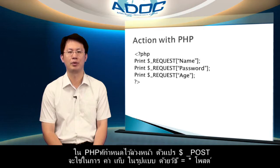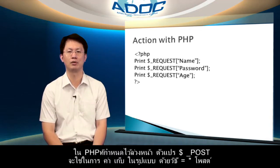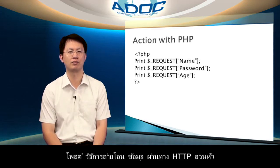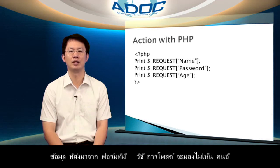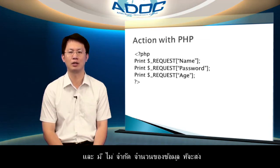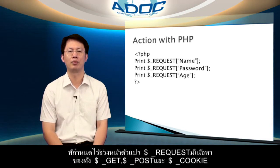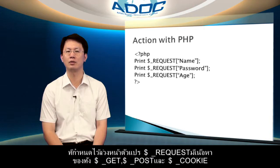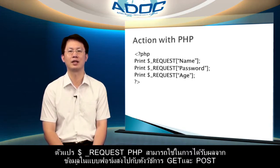In PHP, the predefined POST variable is used to collect values in a form with method equal to POST. The POST method transfers the information via HTTP headers. Information sent from a form with the POST method is invisible to others and has no limits on the amount of information to send. Here we use the REQUEST method. The predefined REQUEST variable contains the contents of both GET, POST, and cookie. The PHP REQUEST variable can be used to get the results from form data sent by both the GET and POST methods.